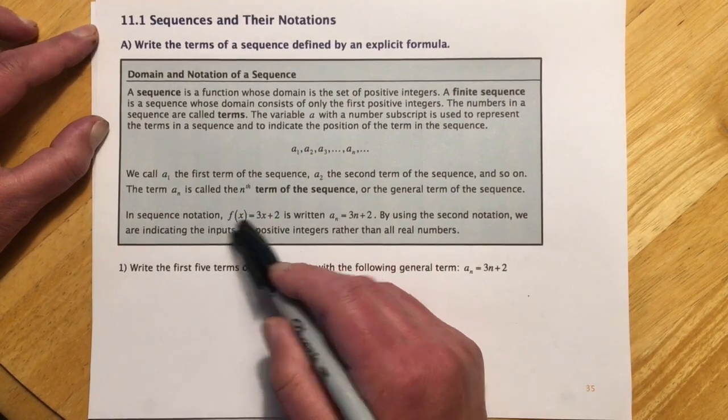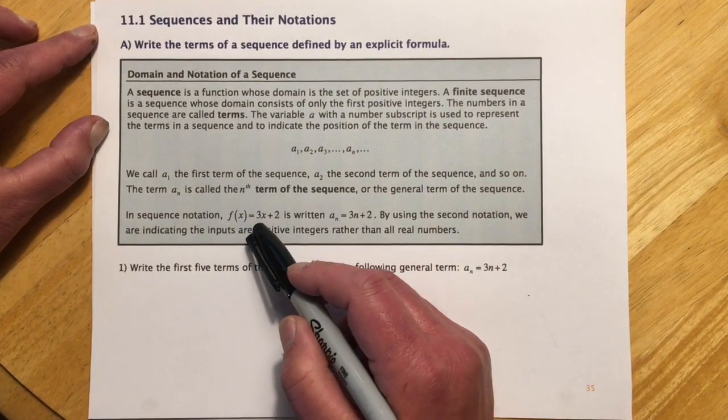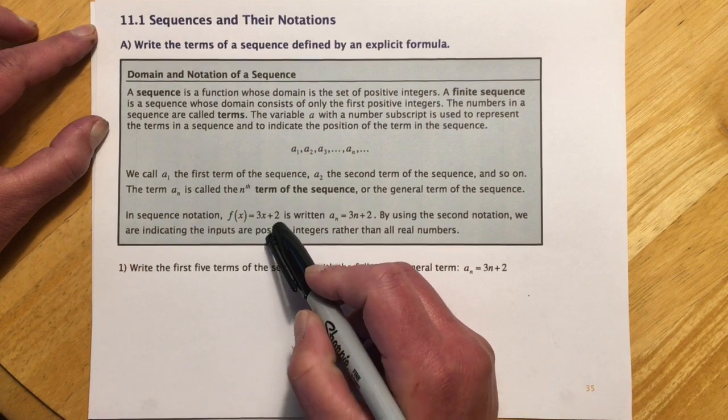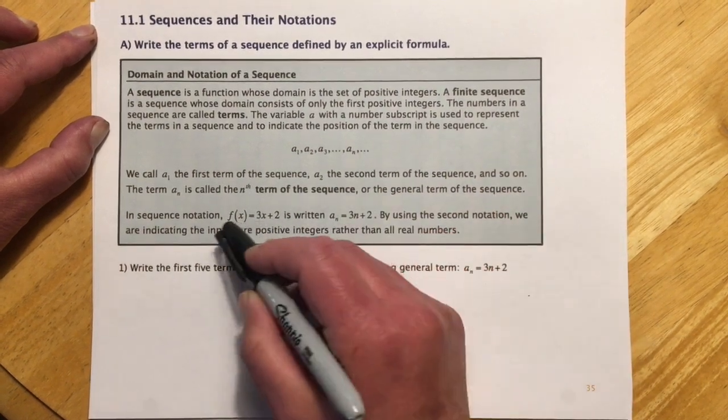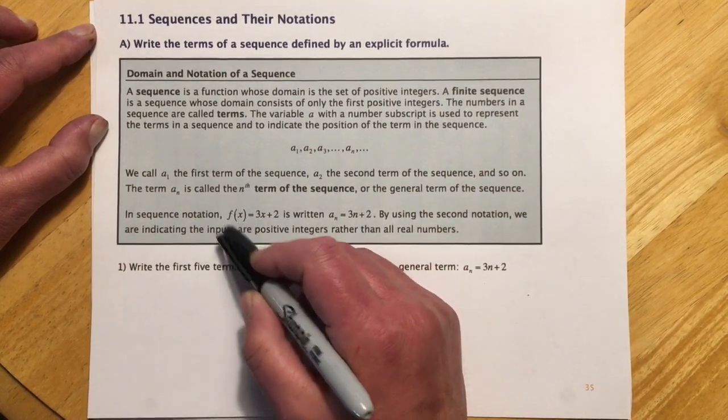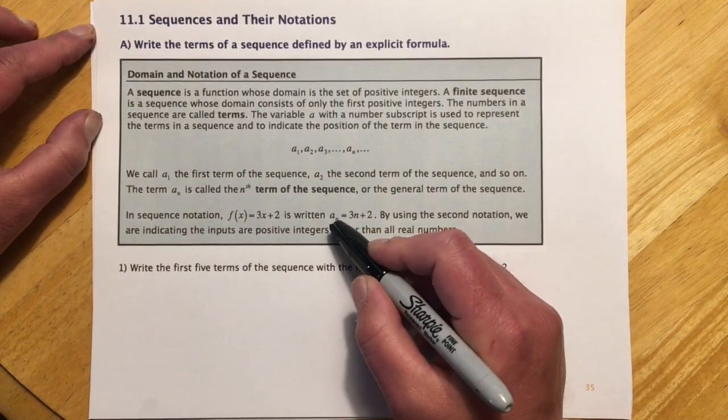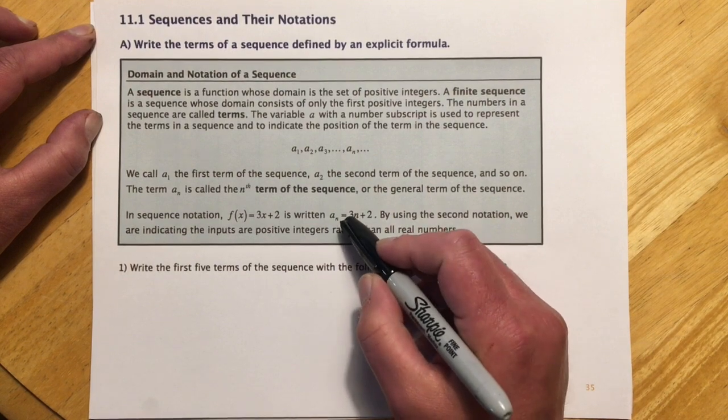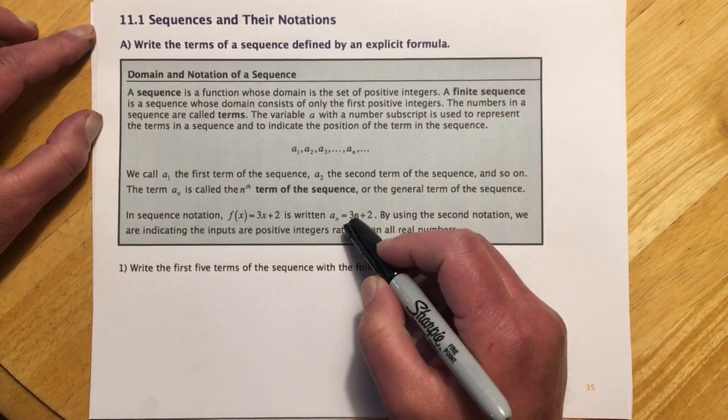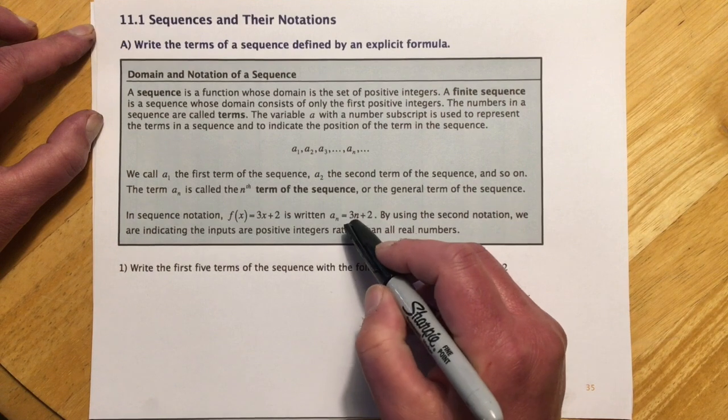Sequence notation, so if we have a function like f of x equals 3x plus 2, that's going to be written, so instead of f of x, I know we've just gotten used to this replacing y, so now it's going to be a sub n, so the nth term is represented by 3 times n plus 2, so that n is kind of like the new x, it's the new counter.